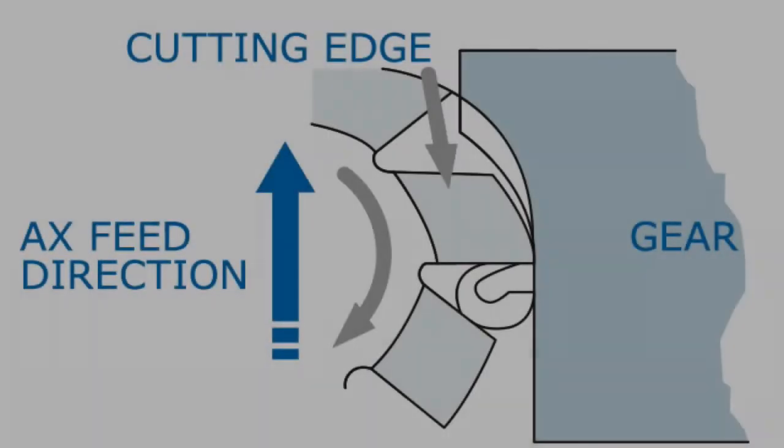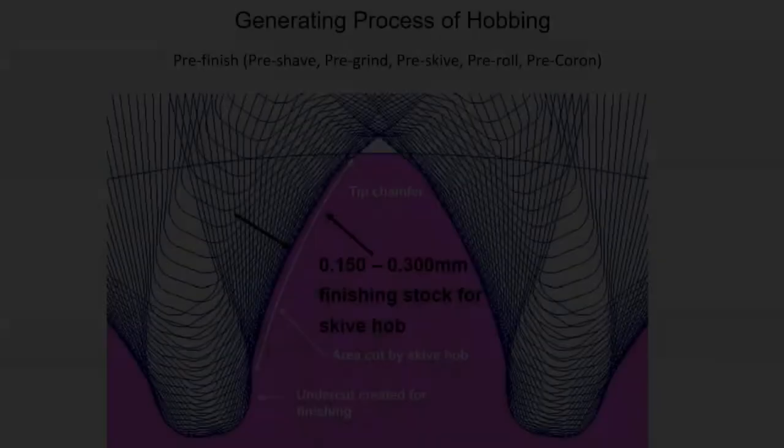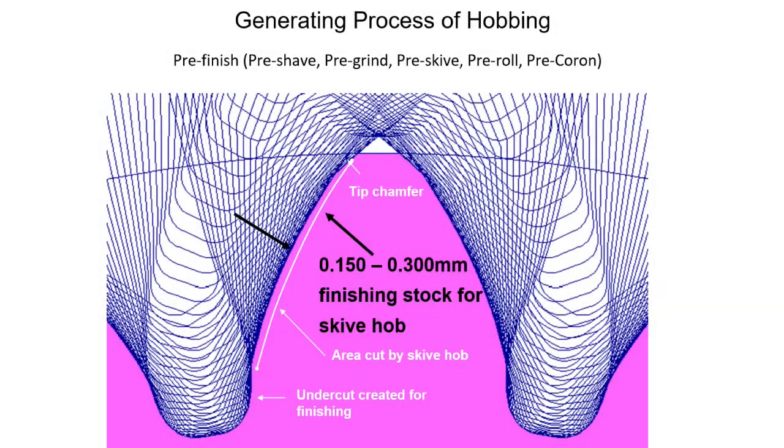Hard skive-hobbing is primarily a finishing operation, and only the flanks of the gear teeth are cut. The root and the OD are generally not finished during the hard-hobbing operation. Climb-hobbing is generally recommended to reduce hob wear during hard-hobbing. Both tool steel and carbide hobs can be used for hard skive-hobbing.